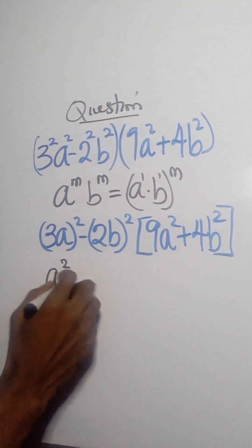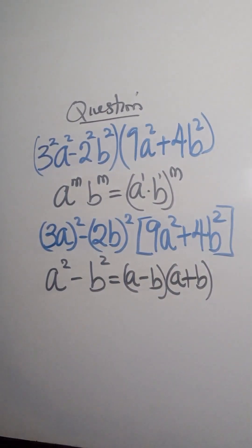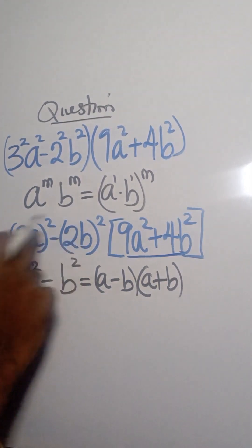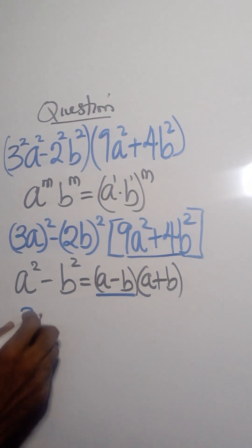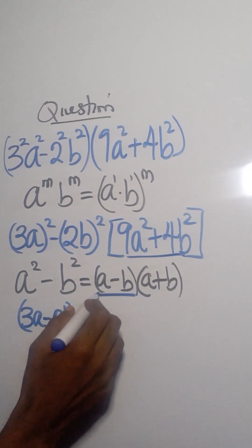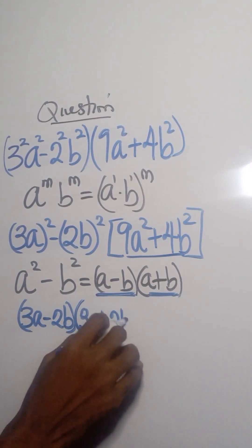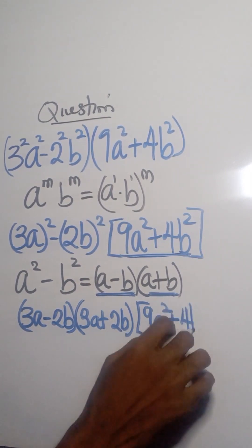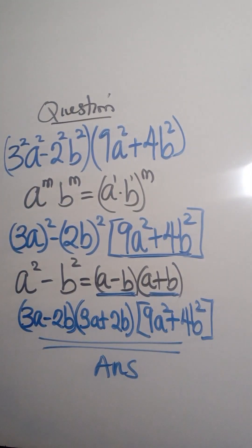From this we can apply the difference of two squares: this looks like a squared minus b squared, which gives us (a minus b) multiplied by (a plus b). Applying that to this part, we get (3a minus 2b) multiplied by (3a plus 2b), and we still have the remaining part 9a squared plus 4b squared. This gives us our final answer. Thank you so much for watching this video — if you liked it, hit the subscribe button and kindly share it with your friends.